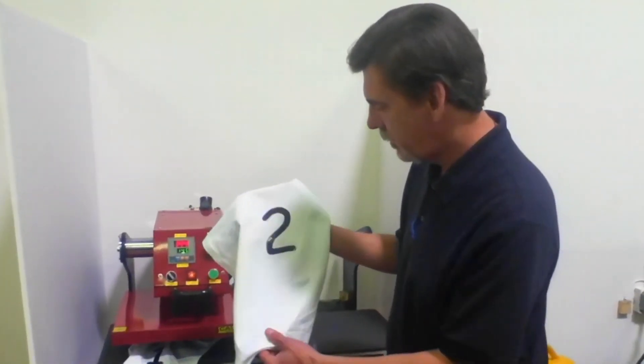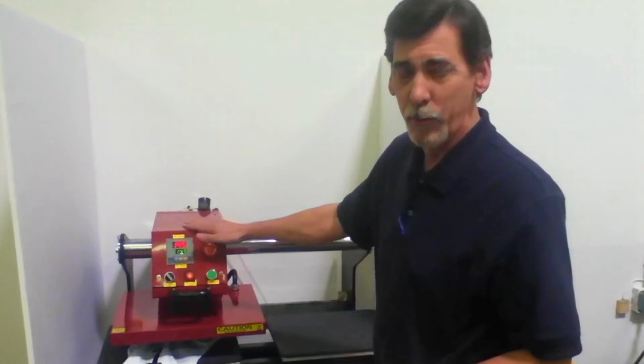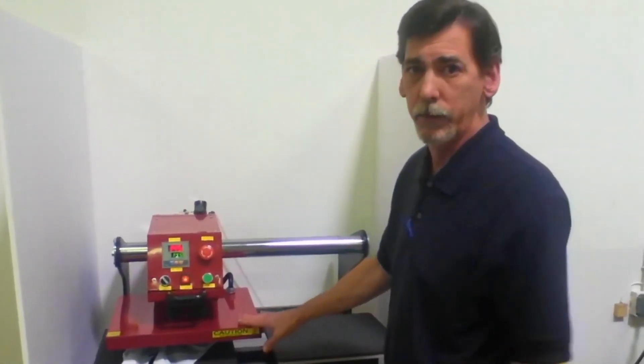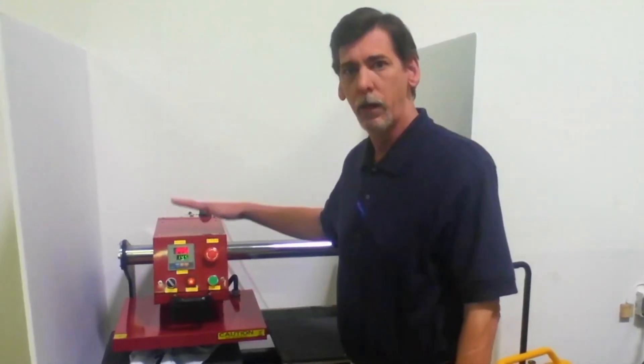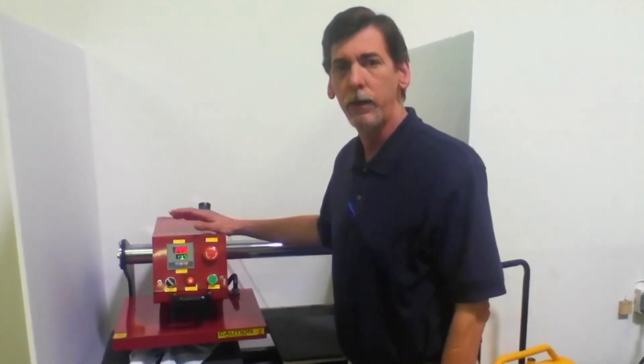And you'll be done. Very easy to operate, and it'll double your production in the shop. So a 15 by 15 inch automatic clamshell heat press.